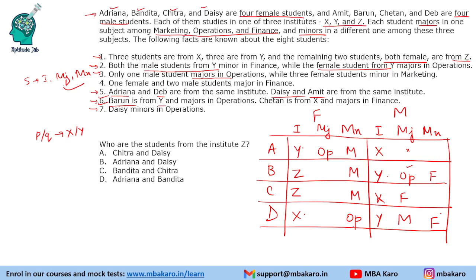Last condition: 1 female and 2 male students major in finance. There is 1 female in finance, but which female cannot be determined. 1 male student is already majoring in finance, so another male student will also major in finance. This is how the table can be found, and then we can subsequently answer the questions. We know one of the female students will major in finance, but which one we do not know.